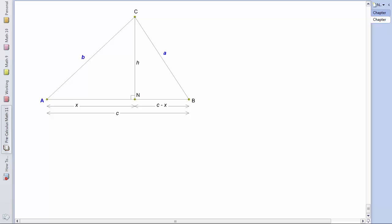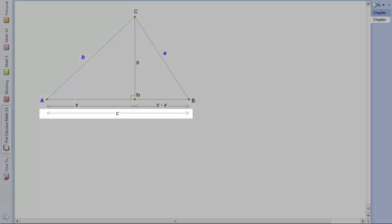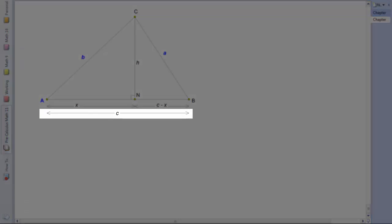Well, the first thing to do again is drop a perpendicular from C down to the base. And this gives us two right triangles with a height of H. The other thing that I've done on the diagram is shown that if the whole base has a length of C, we can split that into lengths of X and C minus X.